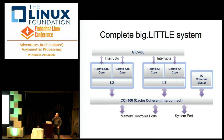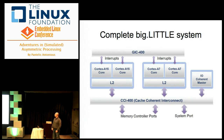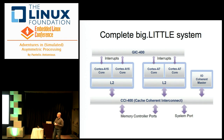That's a typical big.LITTLE system — the same one that was in the big.LITTLE switcher. You have clusters of A15 and A7 cores, a coherent interconnect, and an interrupt controller. The important thing to notice is that in most implementations the clusters share power domains and frequencies. It's not like you can select each A15 or A7 core to run on its own frequency — you have to clock them together and power them down together.